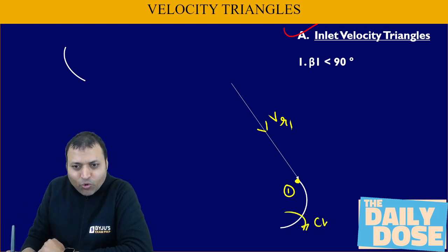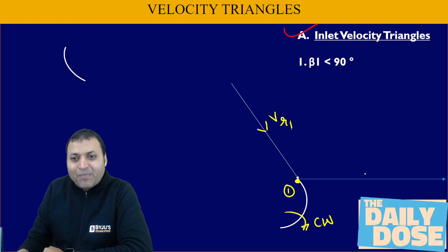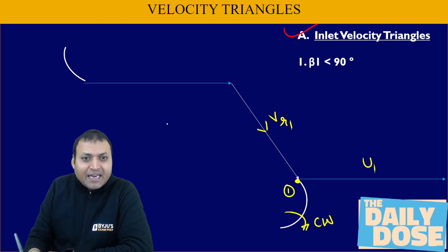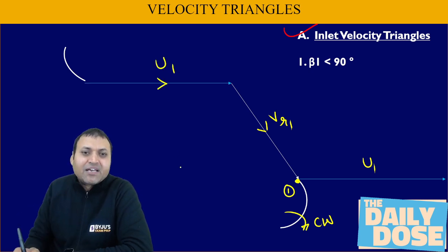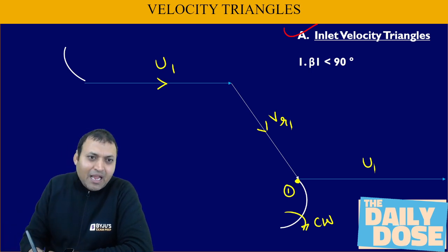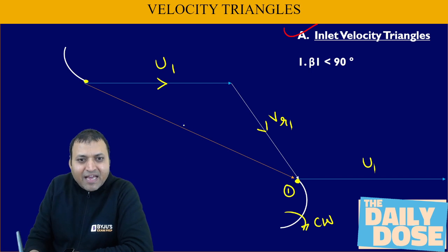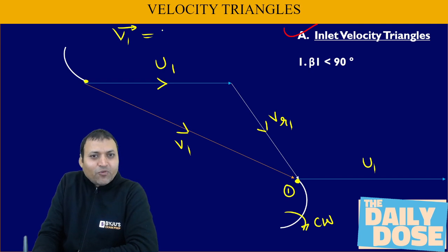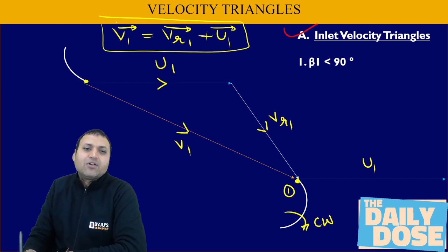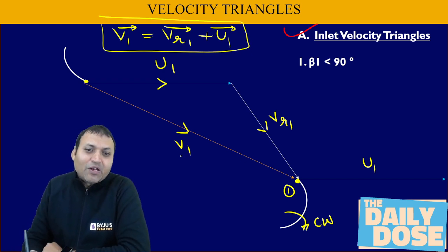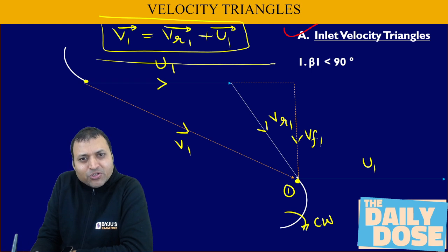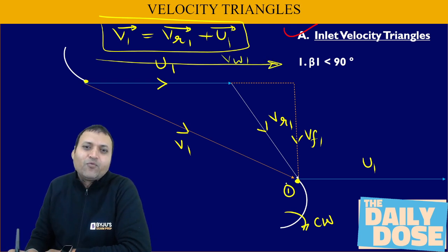The rotor is rotating clockwise, so the tangential velocity of the blade u1 is in the right-hand side. This u1 vector can be placed in space provided the orientation and magnitude remain the same. If we extend the guide vane tangentially, we get the absolute velocity of the fluid. The relation between these three velocities is: absolute velocity is the vector addition of relative velocity plus blade velocity. So v1, the absolute velocity, can be resolved into two components — the vertical component is the flow component vf1, and the horizontal component is vw1, the whirl or tangential component.